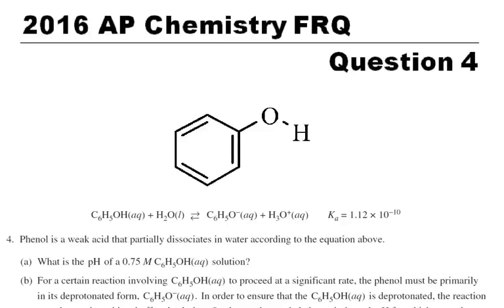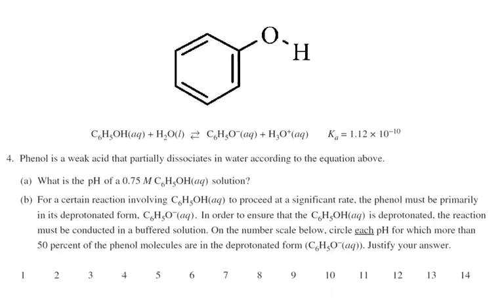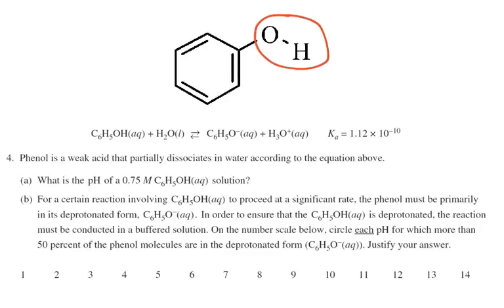Question 4 from the 2016 AP Chemistry exam is dealing with phenol. So phenol is a weak acid, but if you look at it, it doesn't even look like a weak acid. In fact, a lot of students look at this and say no, that's a base because it has OH on it.